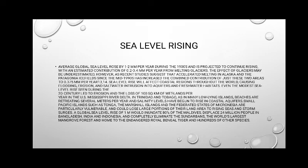Average global sea level rose by 1 to 2 mm per year during the 1900s and is projected to continue rising, with an estimated contribution of 0.2 to 0.4 mm per year from melting glaciers. The effect of glaciers may be underestimated; however, as recent studies suggest, the accelerating melting in Alaska and the Patagonia ice field since the mid-1990s has increased the combined contribution of just these two areas to 0.375 mm per year.